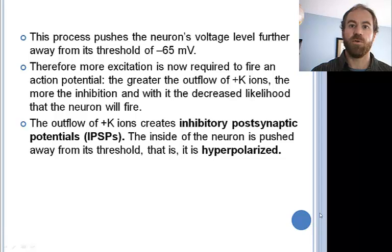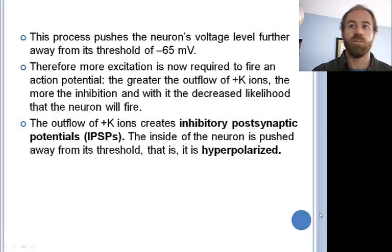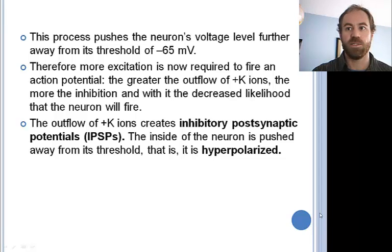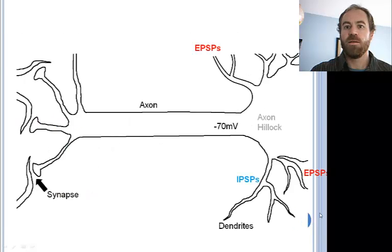Therefore, more excitation is now required to fire an action potential. The greater the outflow of potassium ions, the more the inhibition, and with it the decreased likelihood that the neuron will fire. The outflow of potassium ions creates inhibitory postsynaptic potentials, or IPSPs. The inside of the neuron is pushed away from its threshold — that is, it is hyperpolarized.